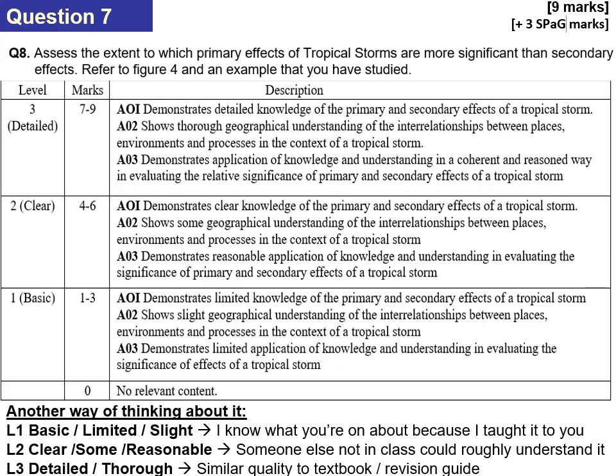The mark scheme for this type of question has three levels: detailed, clear, and basic. Basic means the examiner understands it only because they taught you. Level two means someone outside the class could roughly follow it. Level three reads like a textbook or revision guide — someone who has never been in the class would thoroughly understand it.